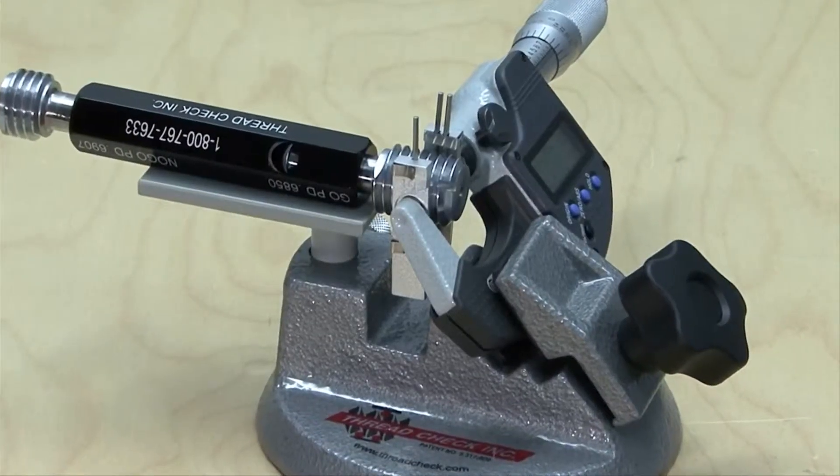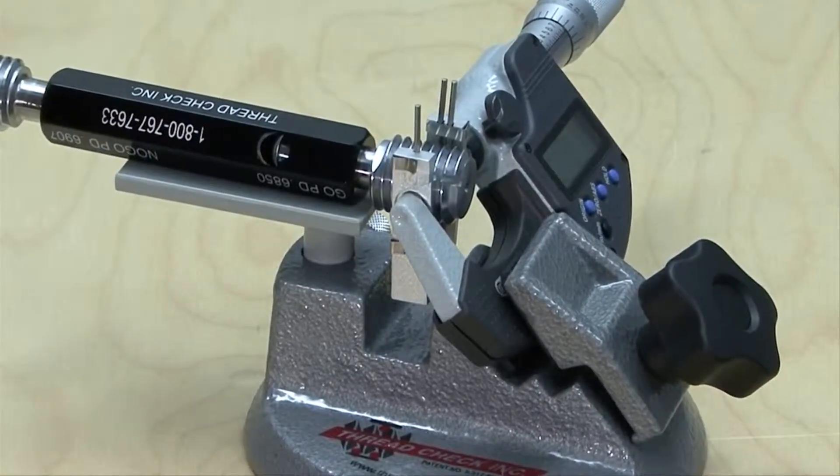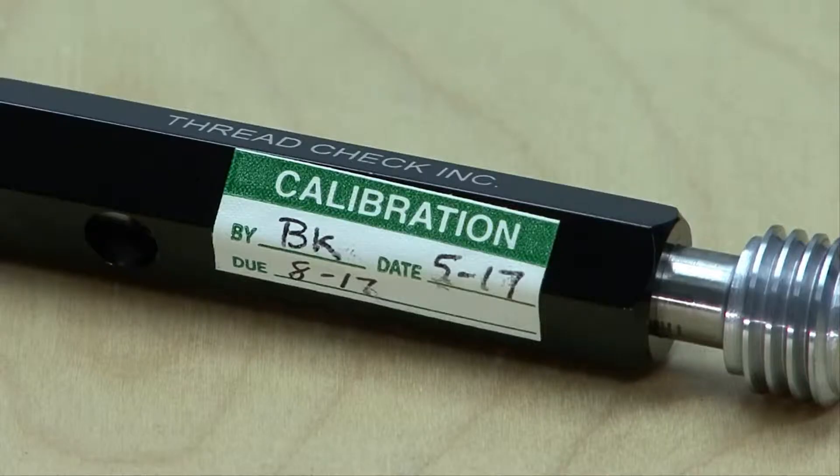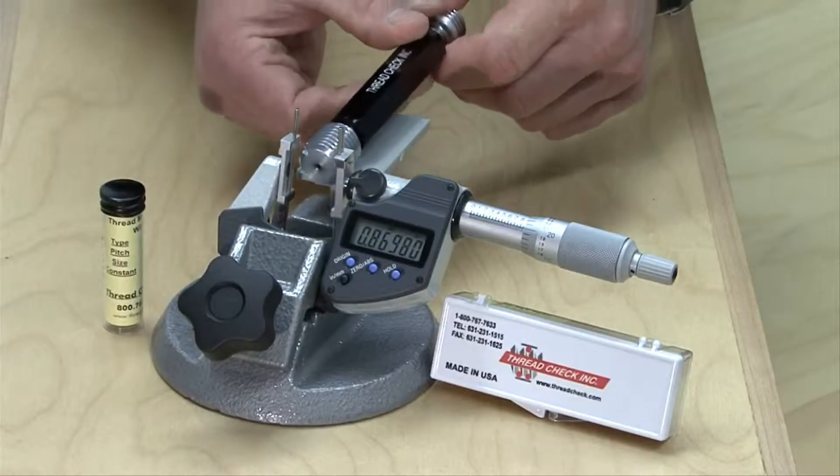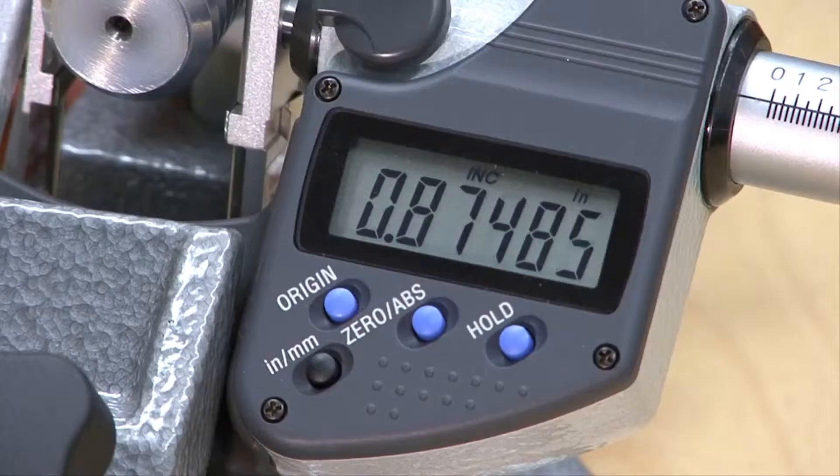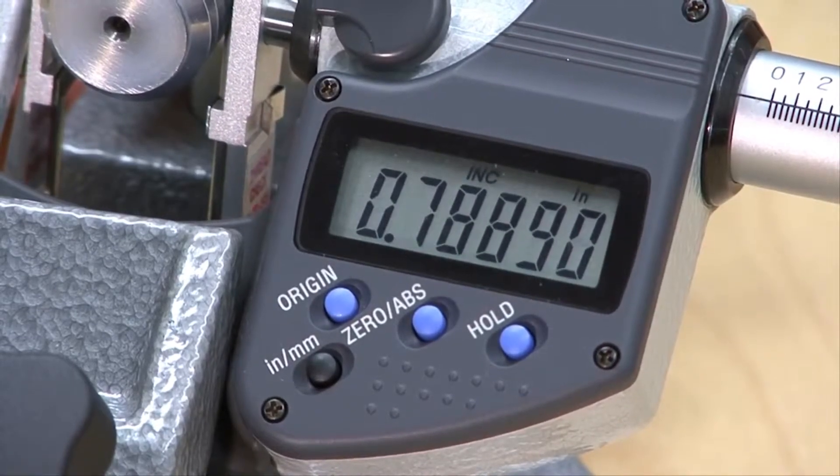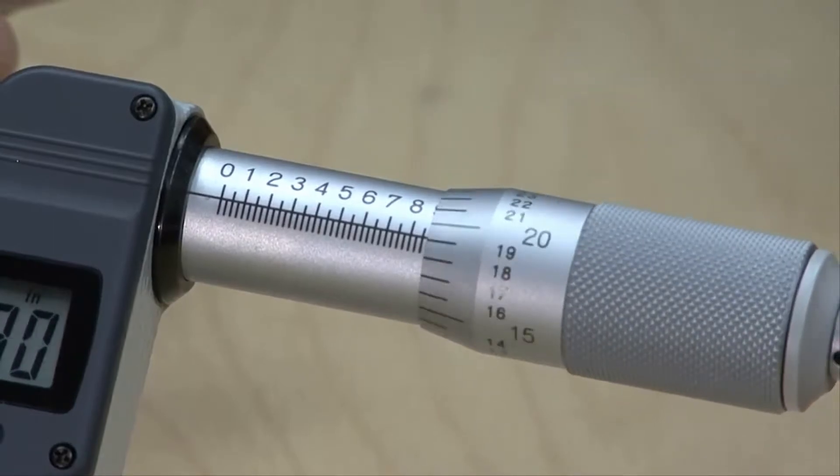The inspector should confirm the gauges are calibrated. It is always advisable to recheck the thread plug gauges prior to use regardless of the calibration sticker's current status. Many companies arbitrarily select annual frequencies of calibration rather than basing frequency on usage. This can create quality issues as thread plug gauges can be worn out of tolerance or damaged during the course of a production run.